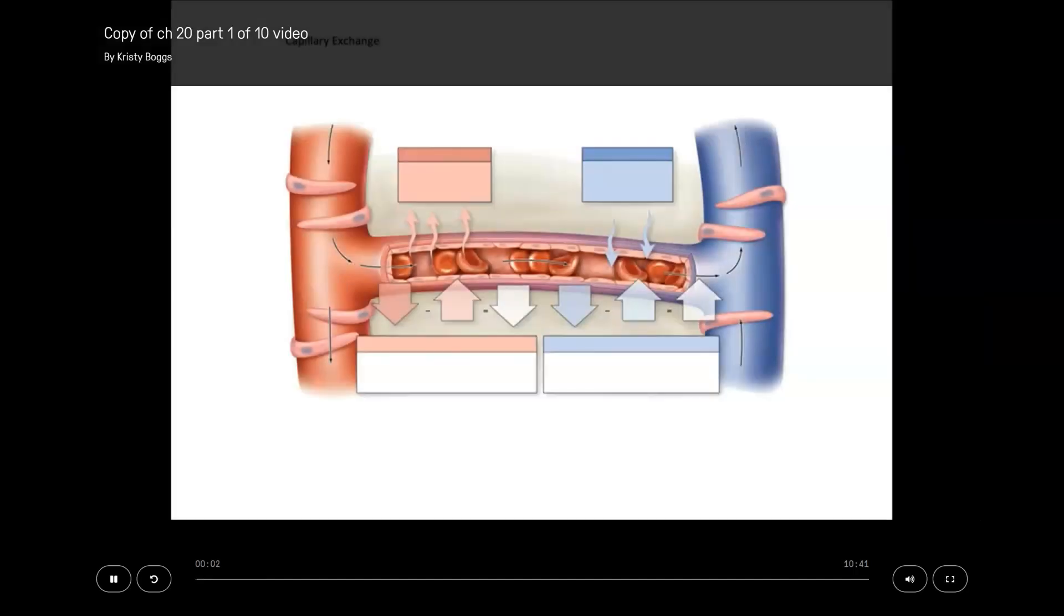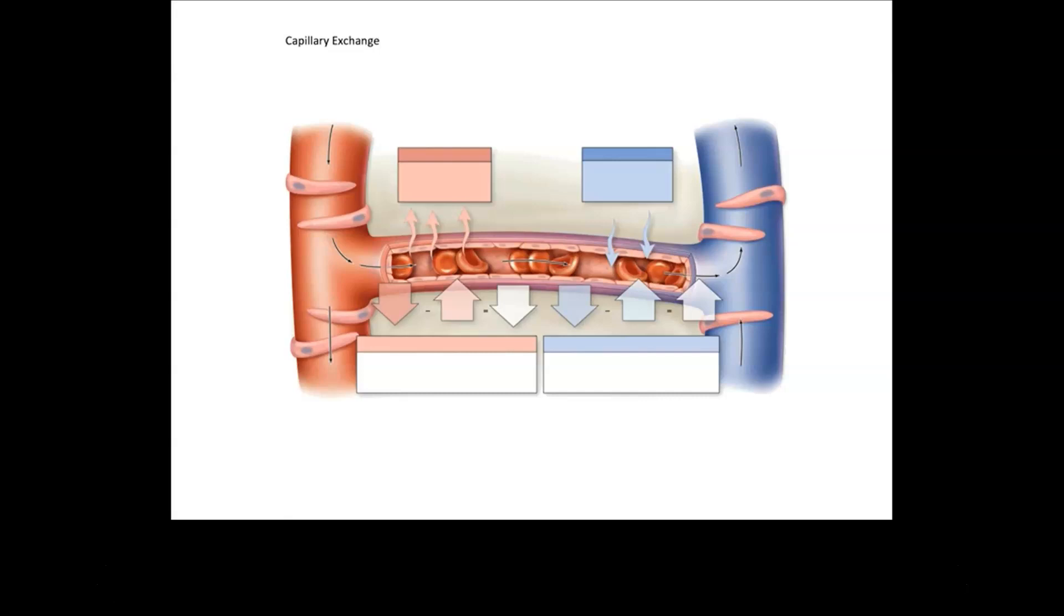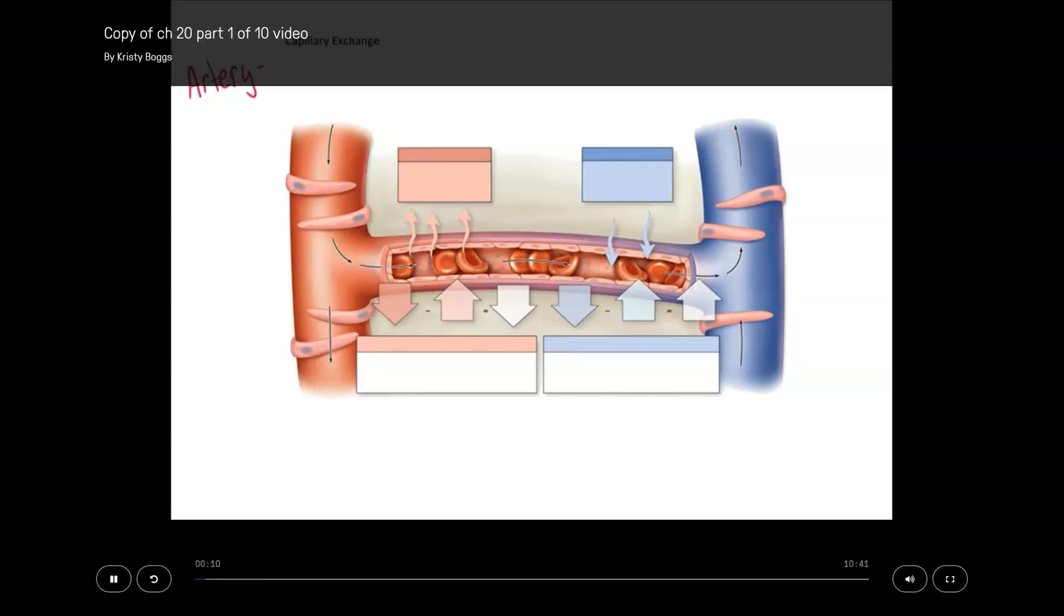Let's look at how capillary exchange works. You have three types of blood vessels. There are arteries. These are what carry blood away from the heart.